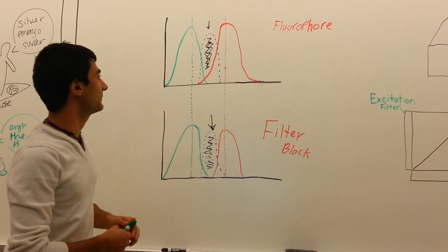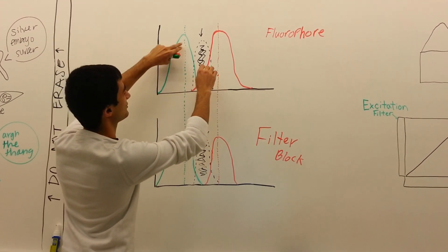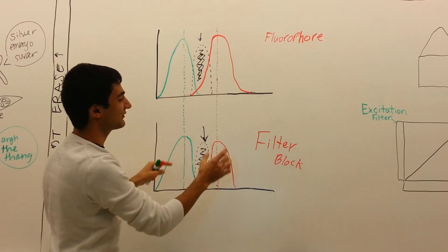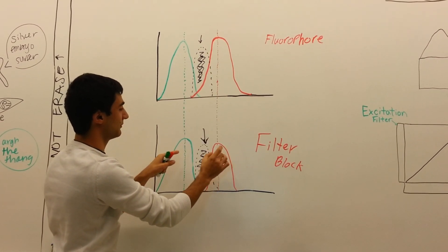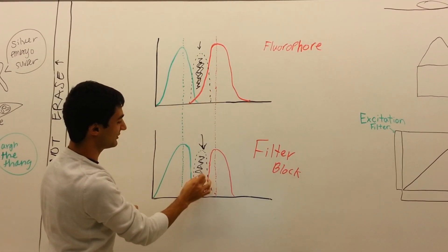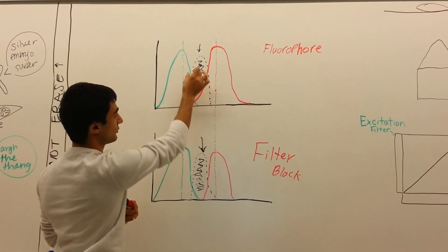As you can see in this diagram, if your fluorophore can absorb and emit light at these two wavelengths, you have to have a filter block that will match those wavelengths as you can see here and here. Notice that the in-between regions here that don't overlap.